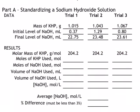In this video we're taking a look at a sample data table for the acid-base titration experiment. There are two parts: in the first part we're going to standardize sodium hydroxide, like we did in our lab. To standardize a solution means to determine its concentration exactly. To do that we're using an acid called potassium hydrogen phthalate, KHP, and its molar mass is 204.2 grams per mole.